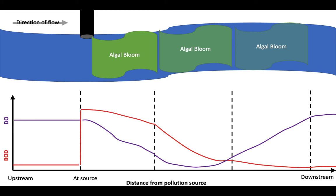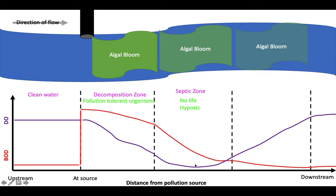This is the oxygen sag curve — called such because it's a curve of oxygen that sags in the middle. We can break this into different zones: upstream is clean water; right at the point source is the decomposition zone, inhabited only by organisms that can tolerate pollution and hypoxic conditions; the septic zone is totally hypoxic with essentially no life; the recovery zone has organisms that can tolerate pollutants and some hypoxia; and further downstream is completely clean water.